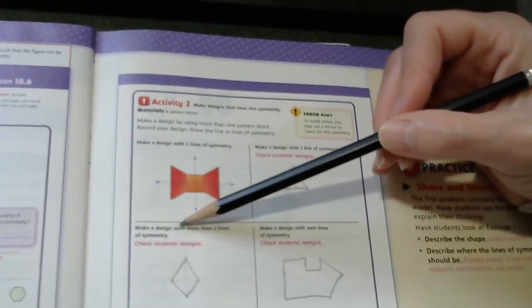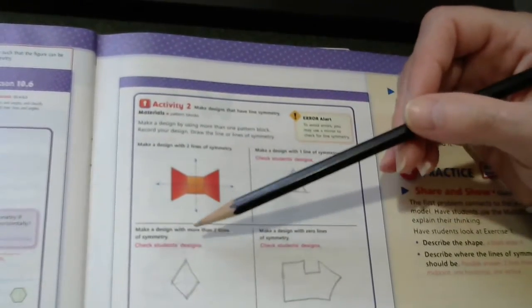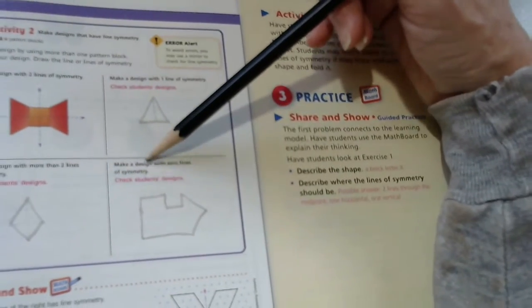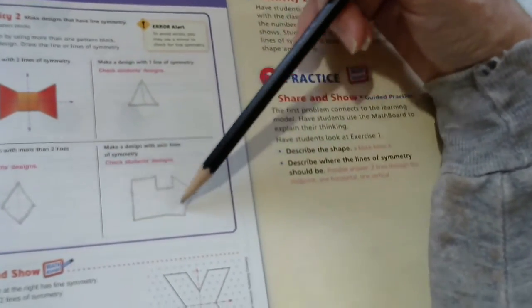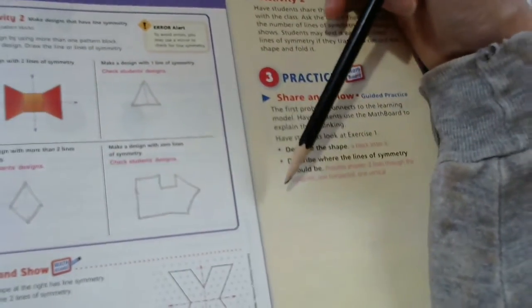Then the next one says, make a design with more than two lines of symmetry. And then the last one says, make a design with zero lines of symmetry. So, something that no matter how you drew a line, it would not make a mirror image.